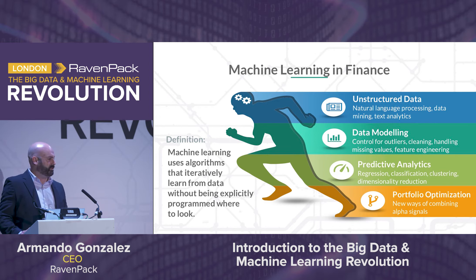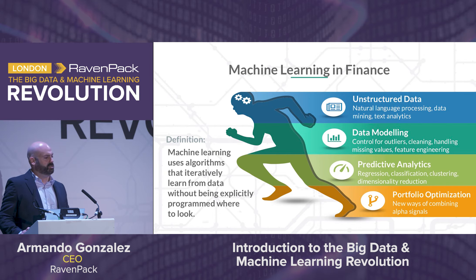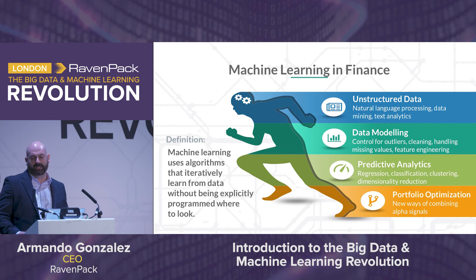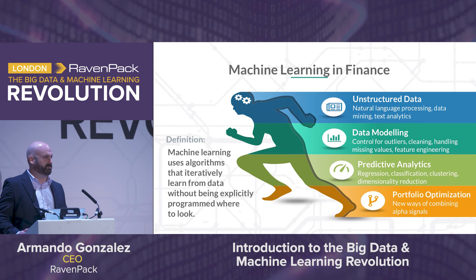There are four areas where I see machine learning being used in finance. One is the area we work on — structured data analysis, natural language processing, as well as text and image recognition. Data modeling is very popular. Predictive analytics is probably very natural to you, and this is the area where, at least in the financial space, we try to gain some advantage from the power of machine learning. And more importantly, when it comes to alpha generation, being able to develop new ways of combining alpha signals and portfolio optimization.